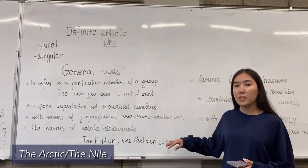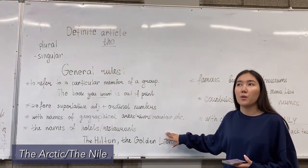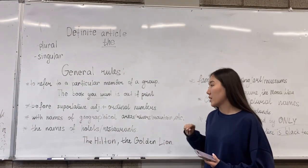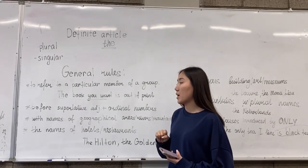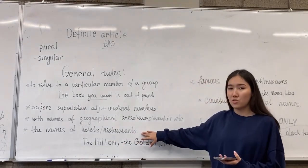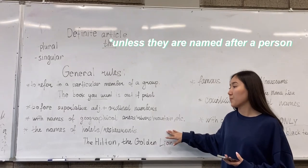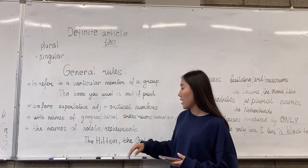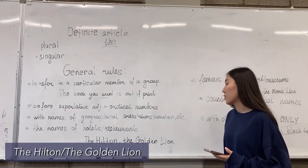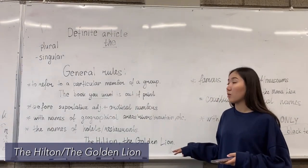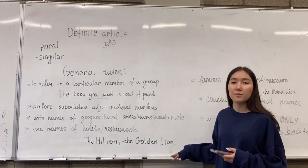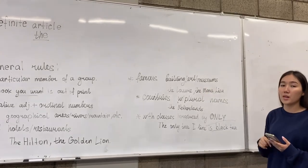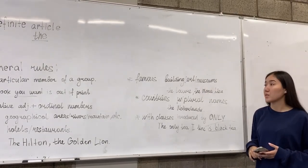We use the definite article with the names of hotels or restaurants, unless they are named after a person. For example: 'They are staying at the Hilton tonight,' or 'We are eating at the Golden Line.' We also use the definite article with the names of famous buildings, museums, or monuments.